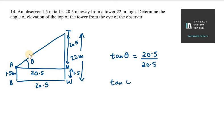Tan theta equals 20.5 over 20.5, which cancels to 1. Now in the tan theta table, one corresponds to 45 degrees. Tan 45 equals 1. Both sides have tan in comparable form. Therefore, theta is 45 degrees. So the angle of elevation of the top of the tower from the observer's eye is 45 degrees.